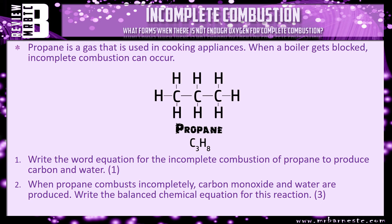I've got a review question for you: propane is a gas used in cooking appliances; when a boiler gets blocked, incomplete combustion can occur. Question one: write the word equation for the incomplete combustion of propane to produce carbon and water — don't forget to put your oxygen in. Question two: when propane combusts incompletely, carbon monoxide and water are produced. Carbon monoxide is CO, water you should know, and propane's formula is given in the question. Have a go at writing the balanced chemical equation.